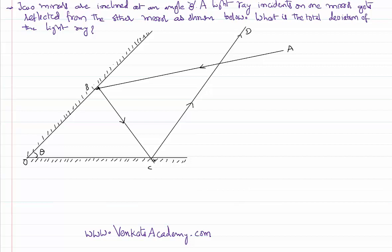Let us first understand what is given in the problem. There are two plane mirrors inclined at an angle theta. A light ray incident on one mirror strikes the first mirror at point B and gets reflected from the other mirror. What is the angle of deviation of that light ray?